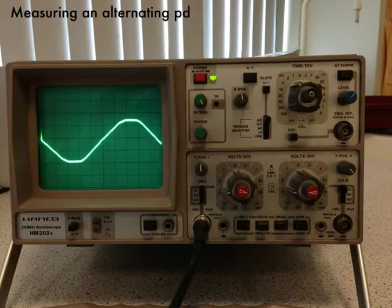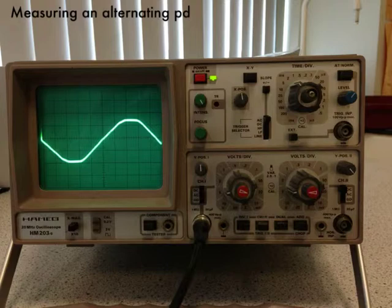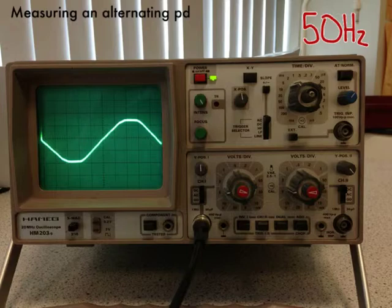That is the Y gain and peak voltage, but I can also use an oscilloscope to work out the frequency of my supply. And from looking at this oscilloscope trace here, I can see that the frequency of the supply here is 50 hertz. How do I know?